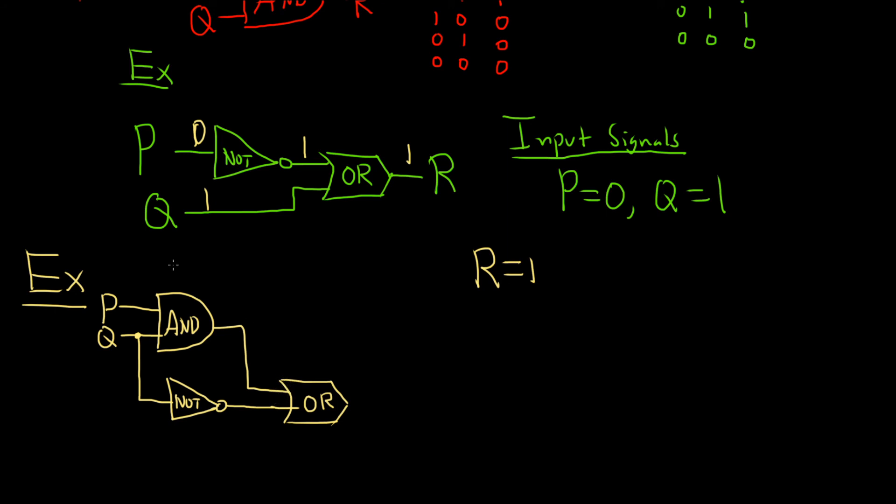And now what we're going to do is we're going to write the Boolean expression for this circuit. So here's how it works. You just work left to right. So P and Q are going into the AND gate. So the result is going to be P and Q. Q is going into the NOT gate. So the result is NOT Q. And now you have P and Q and NOT Q going into the OR gate. So the result is P and Q or NOT Q. So pretty cool, right? So you can take this circuit diagram and convert it into a Boolean expression. Really interesting stuff.